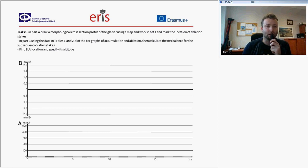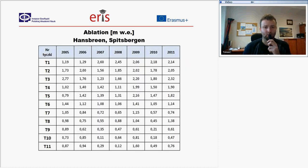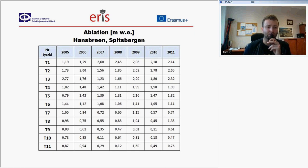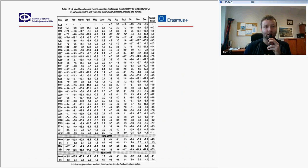In different years there will be different data. You are asked to prepare such graphs. The ablation stake numbers run from T1 to T11, and there is also a table with monthly and annual mean air temperature data.